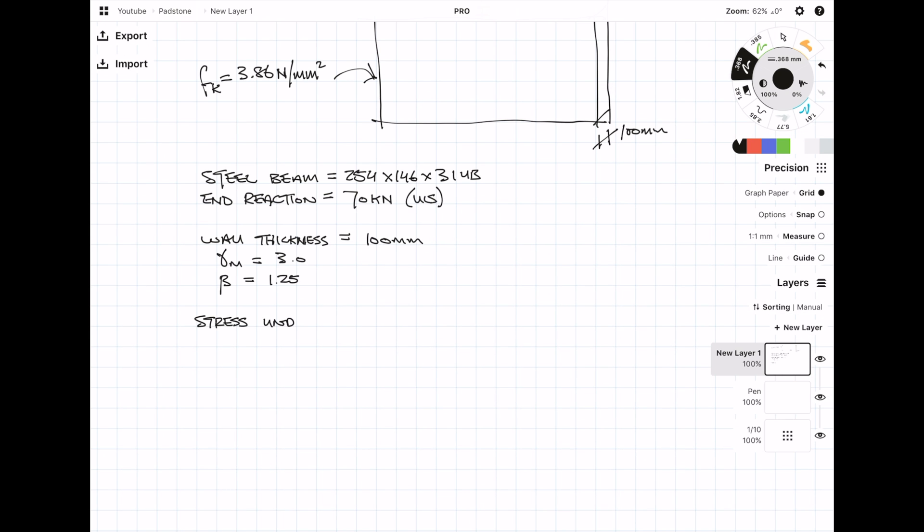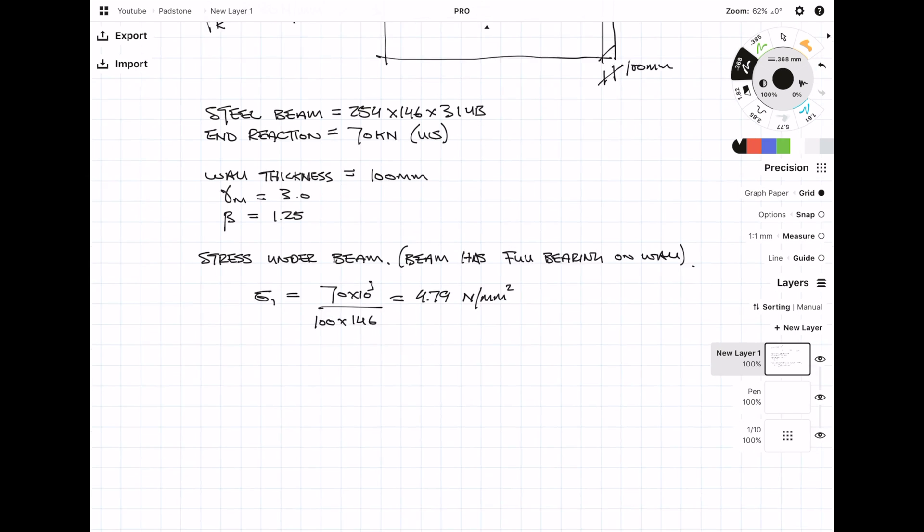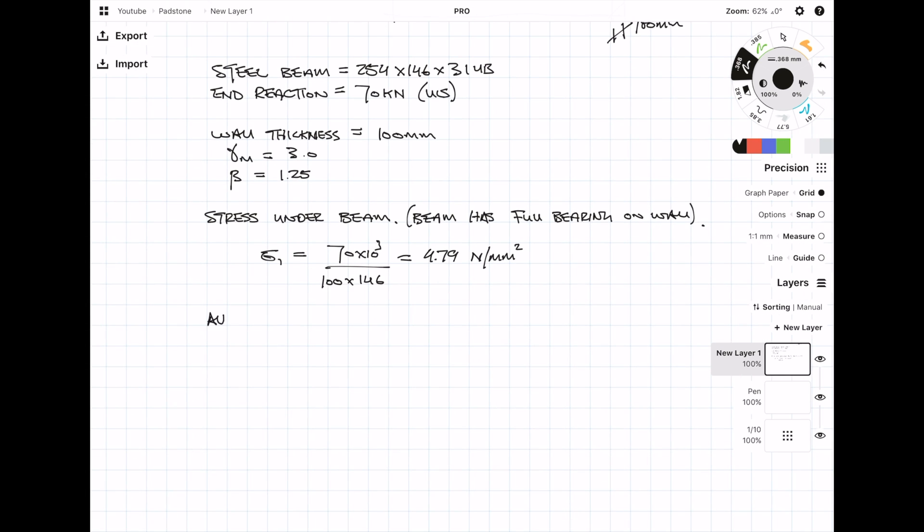So the first check you want to do is to see if you actually even need a padstone. You want to work out the stress under the beam and that's simply done by taking the force 70 kilonewtons divided by the area, so 100 mil by the width of the beam 146. That gives you a stress of 4.79 newtons per millimetre squared.